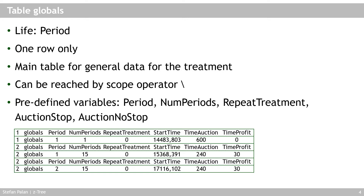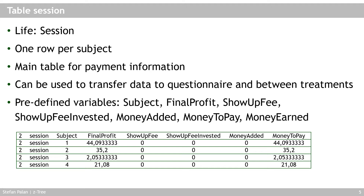The session table is predefined in Z3 and has a lifetime of session, making it the standard table for transferring information from one treatment to another. It's similar to the subjects table in that it has one row per subject and is used to transfer subject-specific data. It is the main table for payment information — since if you run multiple treatments, you need a way to collect all profit information across treatments to pay subjects at the end.